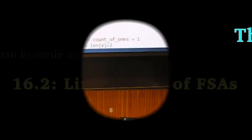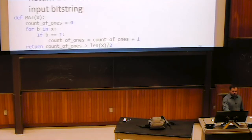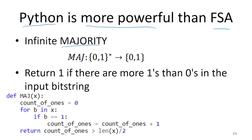There are things we can do with Python that we can't do with finite state automata. For instance, we talked about that majority function which took three input bits and returned one if at least two of them were ones.